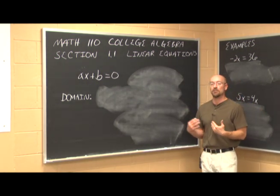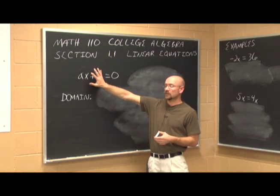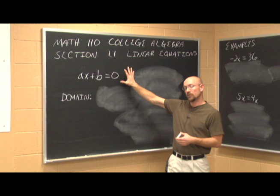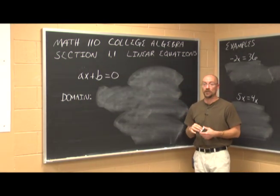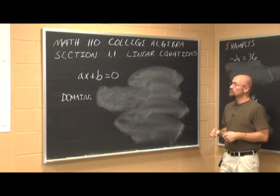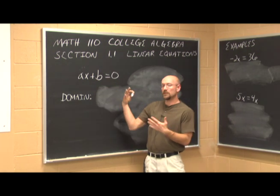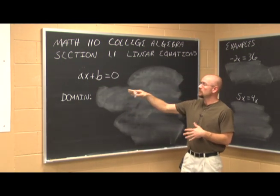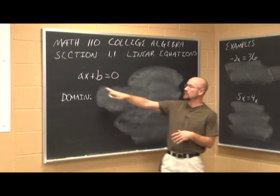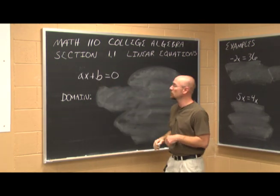A linear equation is a statement of equality — a value on one side of an equal sign equals the value on the other side. In this example, we have a and b, which just represent constants, some number, where a and b are any real number, as long as a is not 0, because if a is 0, then we don't have a variable to work with, since 0 times anything is 0.